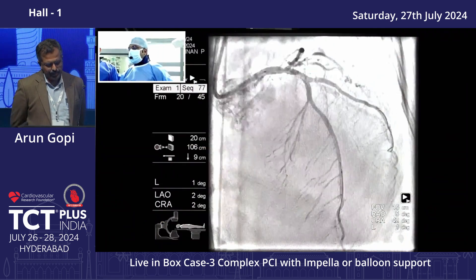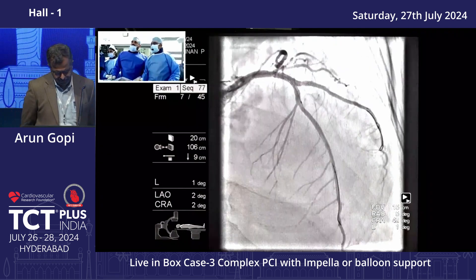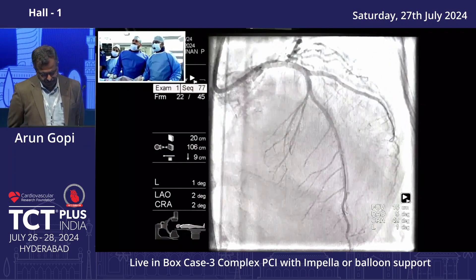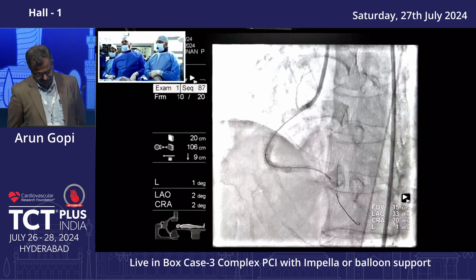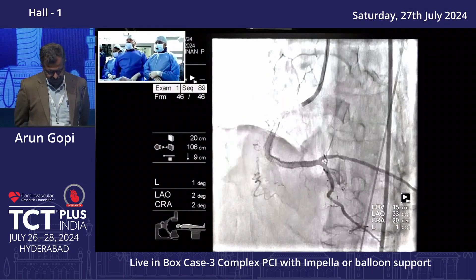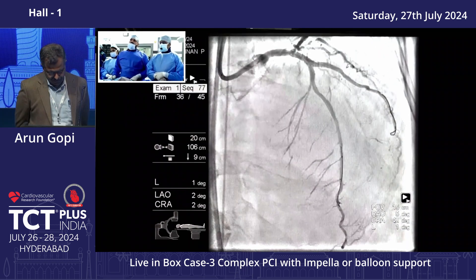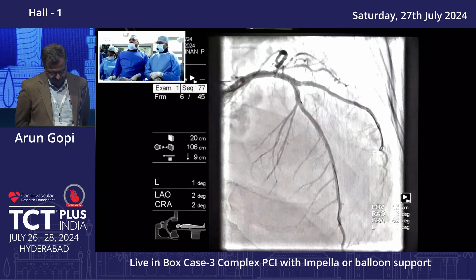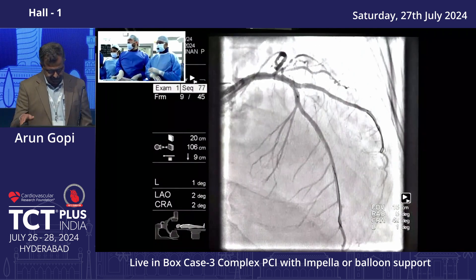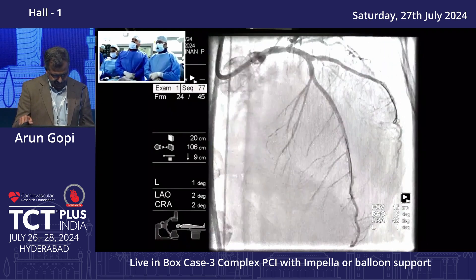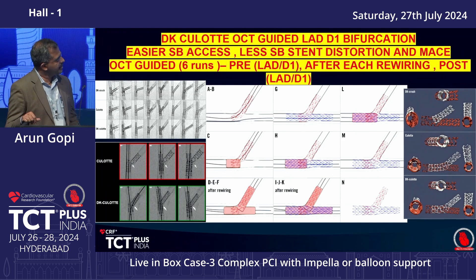Today we demonstrated an OCT-guided DK culotte of the LAD-diagonal bifurcation in a patient with severe LV systolic dysfunction and RCA distal in-stent restenosis — both OCT-guided throughout. Since hemodynamics were unfavorable and the patient had severe LV systolic dysfunction with moderate MR, the whole procedure was done with intra-aortic balloon pump support. The IABP kept the patient hemodynamically stable throughout, maintaining an augmented blood pressure of close to 120 throughout the procedure. The rhythm remained stable and the patient tolerated the procedure well. I thank my team at Metrovent International Cardiac Centre and thank you for the opportunity.